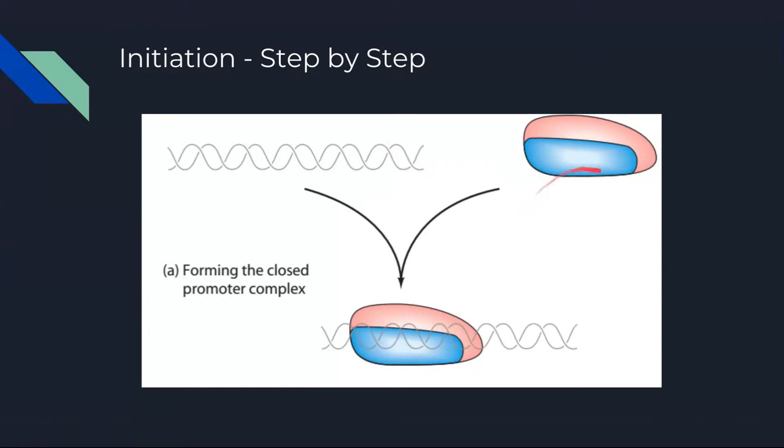As a result of this guidance, RNA polymerase is able to bind loosely to the DNA and produce a closed promoter complex.